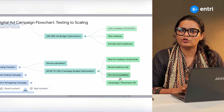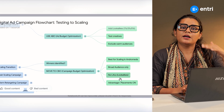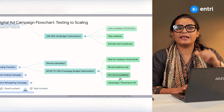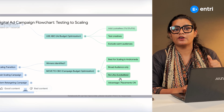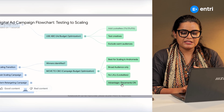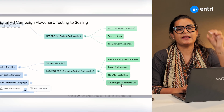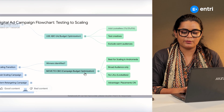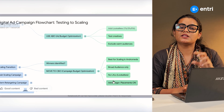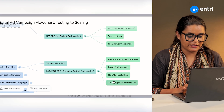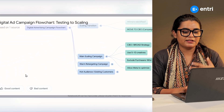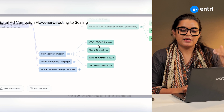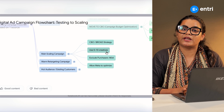If you have a broad audience, you can use the look-alike. Because if you have a broad audience, you can test it. We already know how to scale and work out the content. Advantage plus placement is on. You can use a CBO and 5–10 creatives.